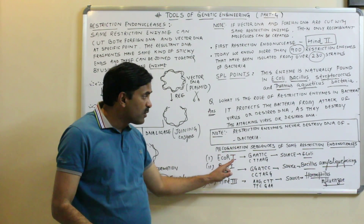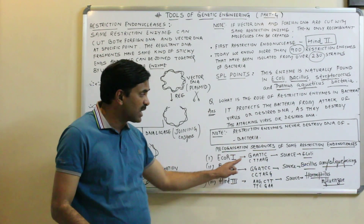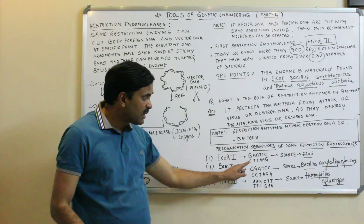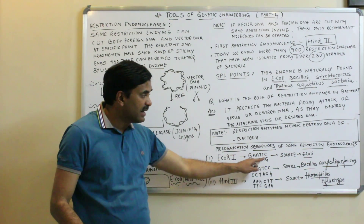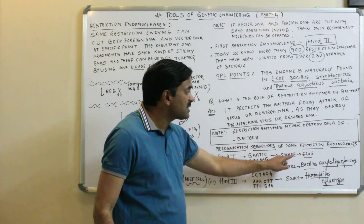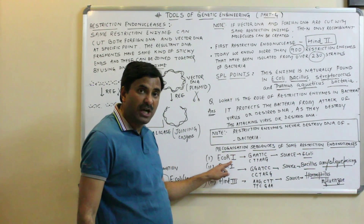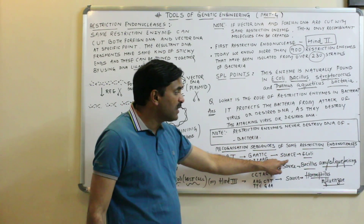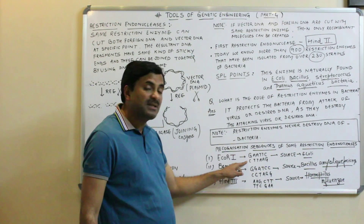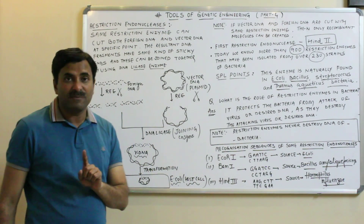For example, EcoRI is a restriction endonuclease enzyme. Its recognition sequence is 5'-G-A-A-T-T-C-3' and the complementary strand is 3'-C-T-T-A-A-G-5'. The source of EcoRI is E. coli, meaning this enzyme is isolated from E. coli bacteria and it recognizes the sequence GAATTC / CTTAAG.